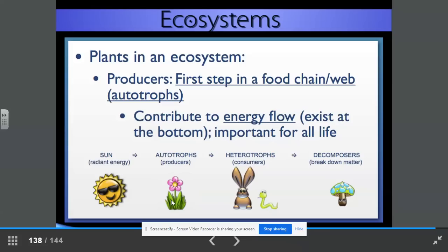Heterotrophs. These are consumers. For example, this rabbit is going to eat the grass and get its energy from the grass, which got its energy from the sun. The snake might eat the rabbit, which got its energy from the grass, which got its energy from the sun. And then we have decomposers. These break down matter. They rely on dead and decayed material to get their energy.